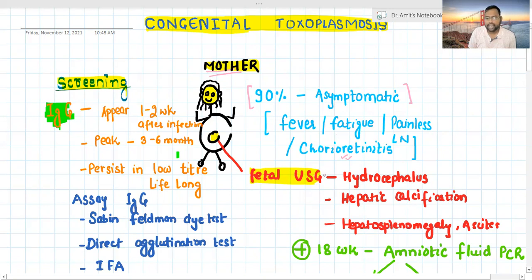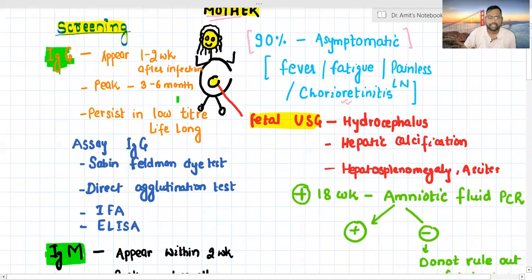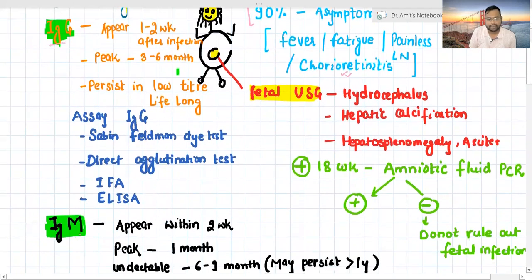If we go for screening, we have two screening tests available. One is IgG and the other is IgM. IgG usually appears one to two weeks after infection and peaks around three to six months, and it persists lifelong in low titer. We have different tests available: Sabin-Feldman dye test, direct agglutination test. Immunofluorescent assay and ELISA are usually not reliable. We frequently use the Sabin-Feldman and direct agglutination tests.